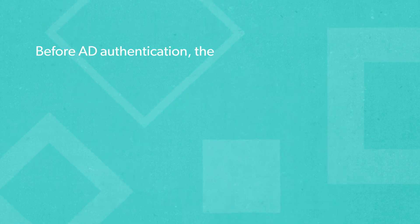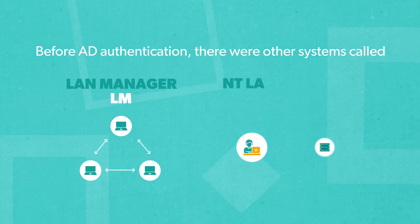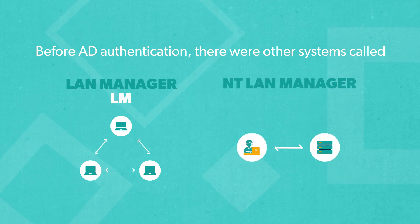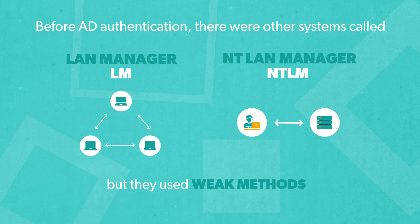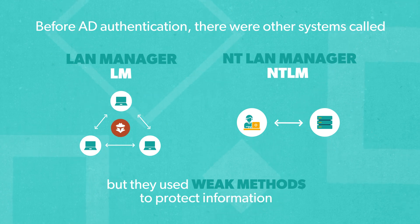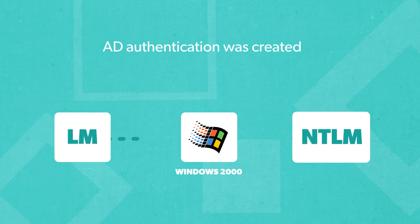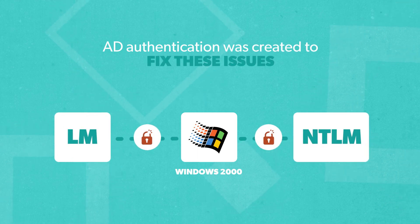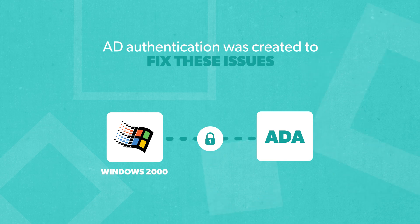Before AD Authentication, there were other systems called LAN Manager, or LM, and NT LAN Manager, or NT-LM. But they used weak methods to protect information, making them vulnerable to cyberattacks. AD Authentication was created to fix these issues, replacing LM and NT-LM in the Windows 2000 operating system.